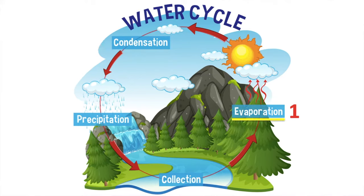First, evaporation takes place. This is when the sun heats up the water on land, in lakes, rivers and seas. The water is turned into a gas called water vapour. The water vapour rises into the sky.